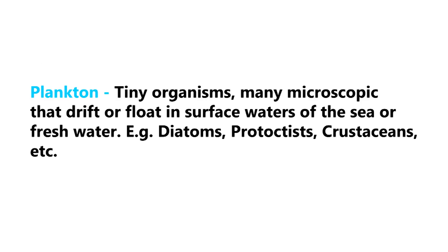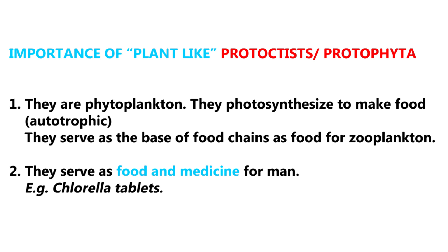Plankton are tiny organisms — many microscopic — that drift in surface water or float in the sea or fresh water. Examples include diatoms, protoctists, and crustaceans. The importance of plant-like protists (Protophyta): they are phytoplankton, they are autotrophic and make food, and serve as the base of the food chain for many organisms especially zooplankton. They can also serve as food for humans, for example in the form of Chlorella tablets.